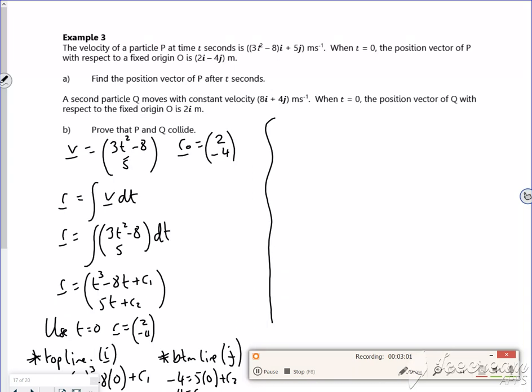The i component of P is going to be the same as the i component of Q. And the j component of P will be the same as the j component of Q. So I need an r for Q. It says constant velocity, so acceleration is 0. So we know from that equation that r is r0 plus vt. So r will be, r0 is 2, 0. v is 8, 4. t.